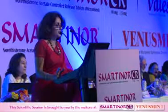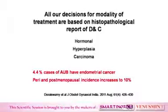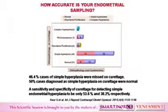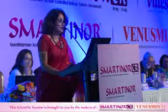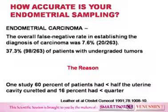When we take our decisions about modality of treatment, they are based on the histopathological report of D&C. Is it hormonal hyperplasia, carcinoma? It has been seen that 4.4% of AUB cases may have endometrial cancer, and in peri- and postmenopausal women the incidence increases to 10%. How accurate is your endometrial sampling? In a 2015 paper, 46% of simple hyperplasia cases were missed on curettage, and 50% diagnosed as simple hyperplasia on curettage were normal, with sensitivity and specificity of only 53% and 38%.